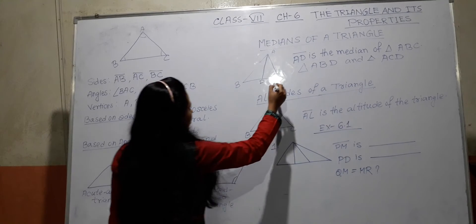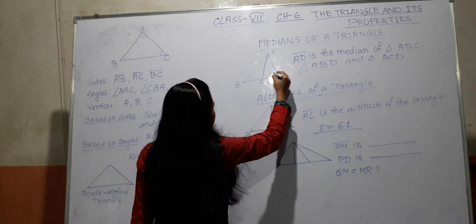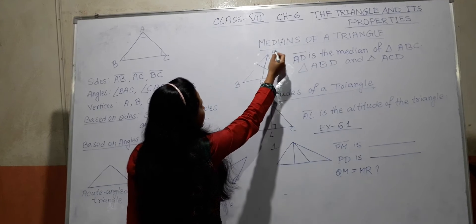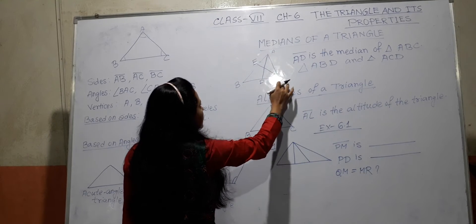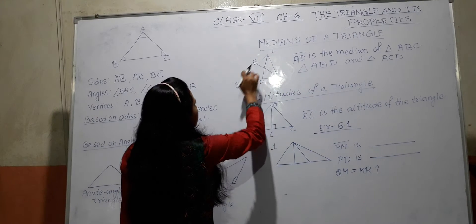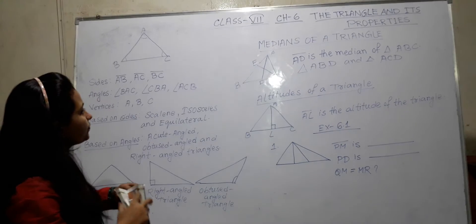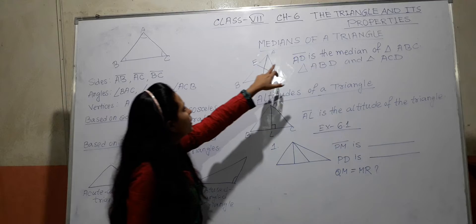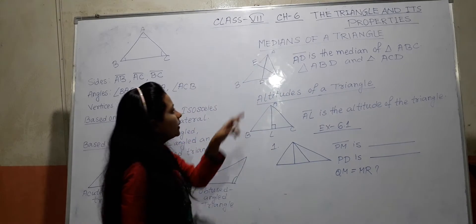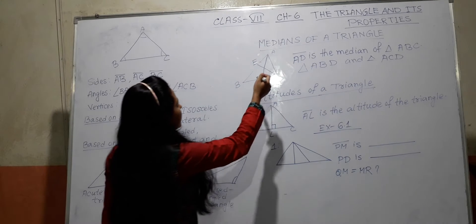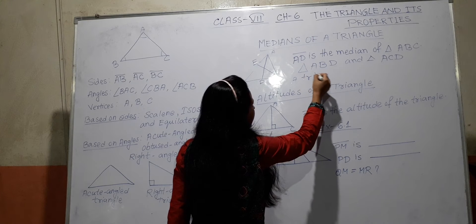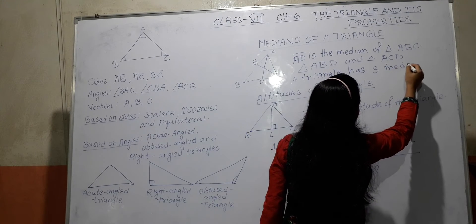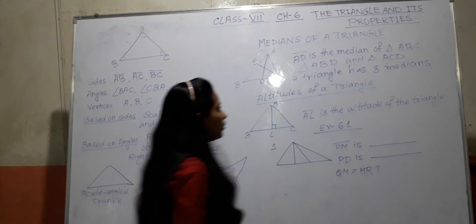Same type, we can draw another median from point C to another side AB, which can divide the triangle into part ACE and BCE. Another median we can draw on the vertices B on AC, which divides the triangle in equal two parts. So we can conclude that a triangle has three medians.